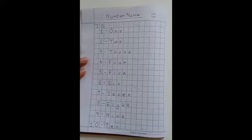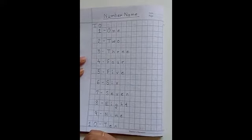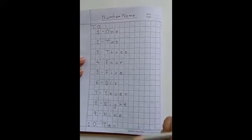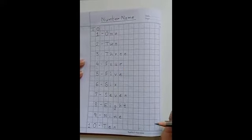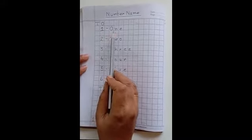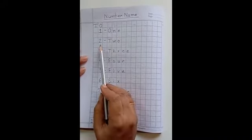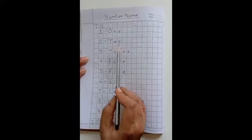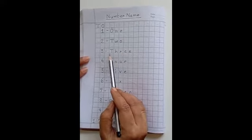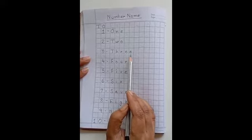Children, let's start with revising number names from 1 to 20. Let's start. 1 - O-N-E, 1. 2 - T-W-O, 2. 3 - T-H-R-E-E, 3.